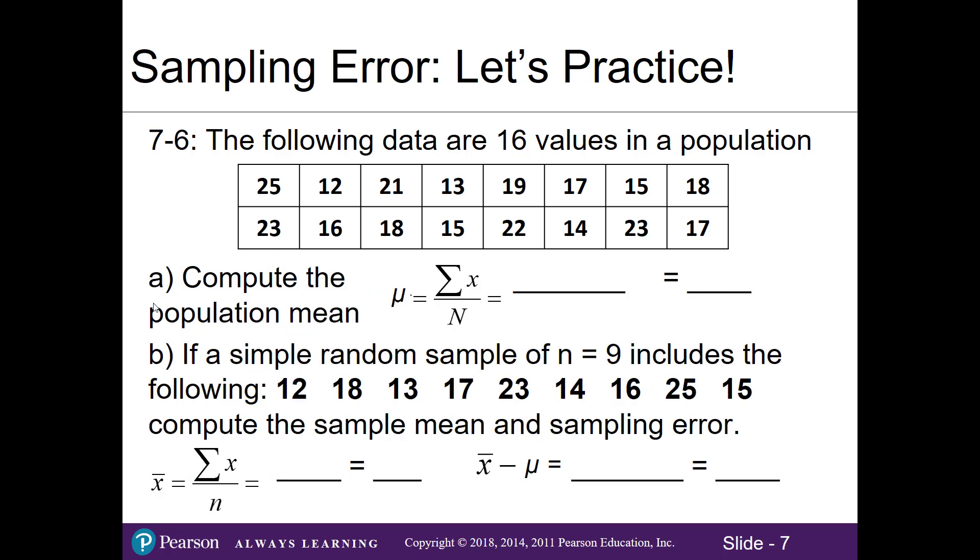In Part A, to find our population mean, the first thing we'll do is add up all of our numbers and then divide by 16. When I add up all my values I get 288, and since I know there are 16 values given to us in the story, I'll go ahead and divide: 288 ÷ 16. Plug this into my calculator and I'll get 18.